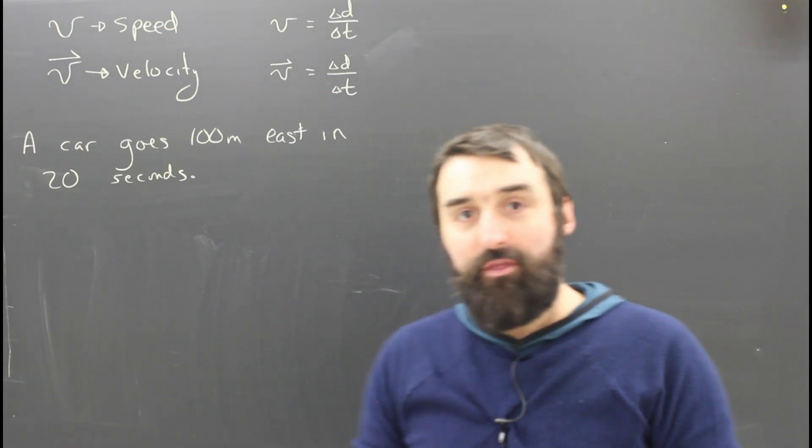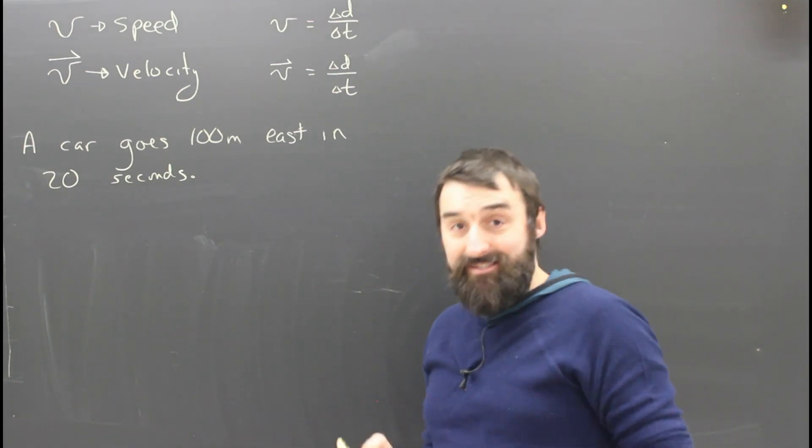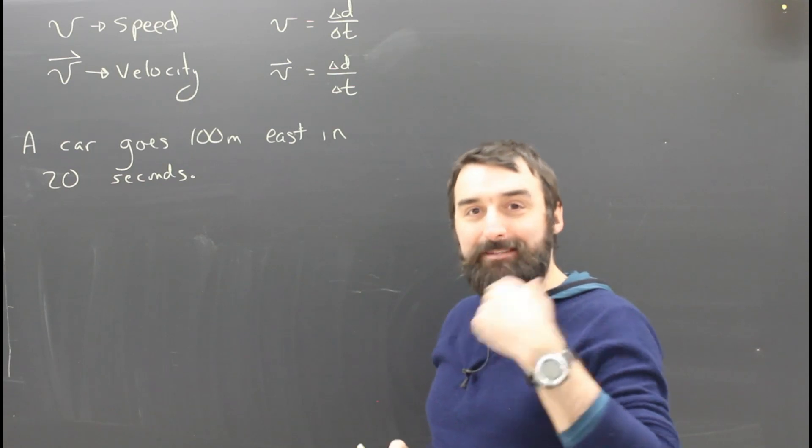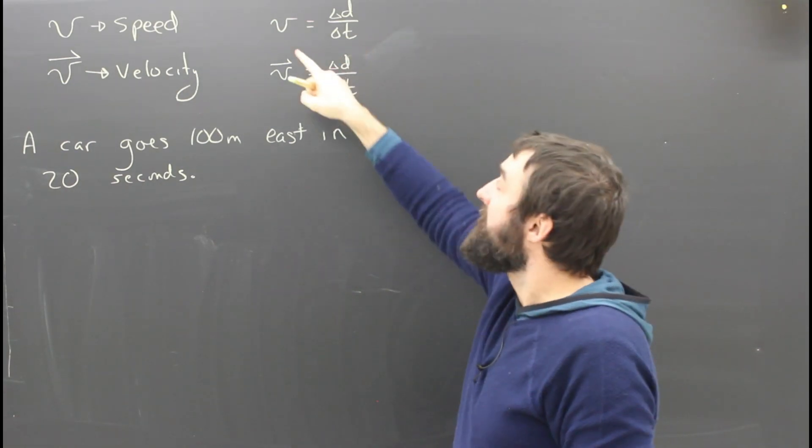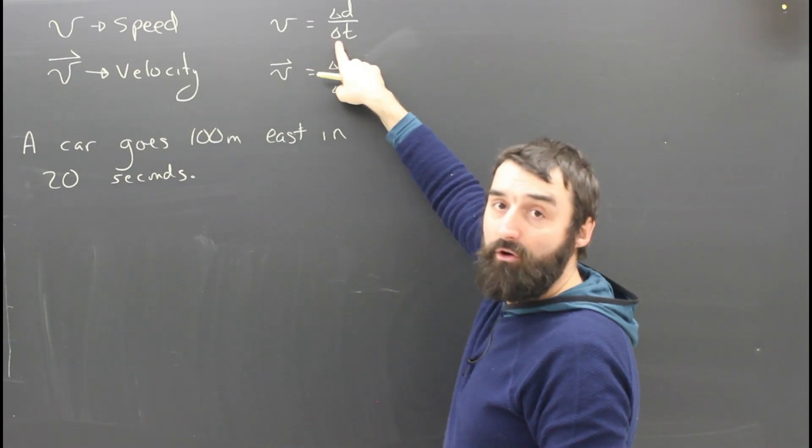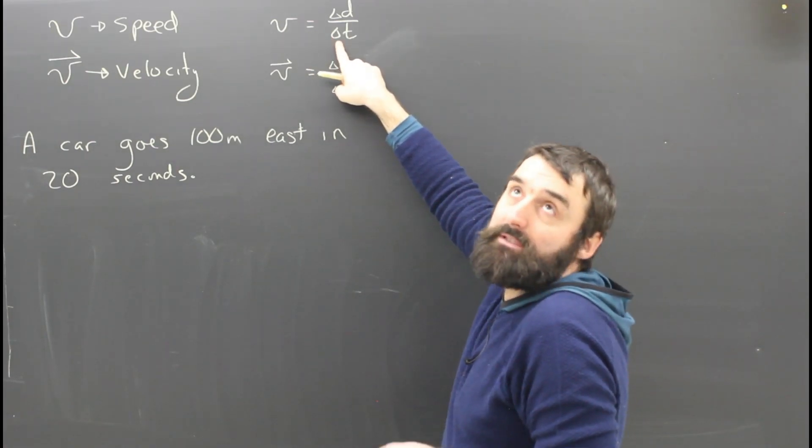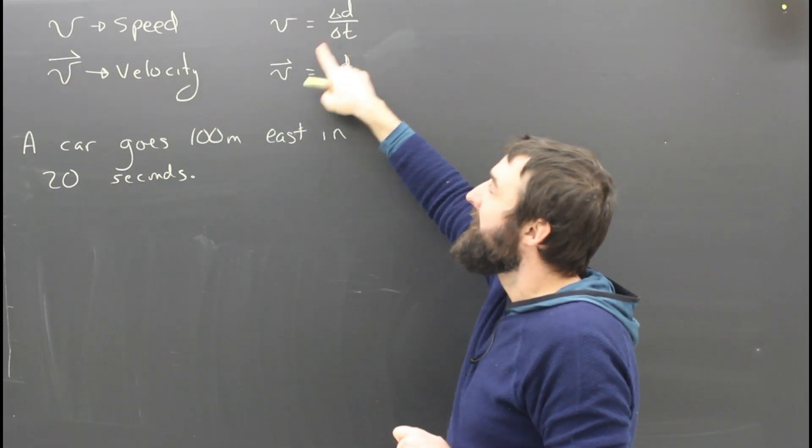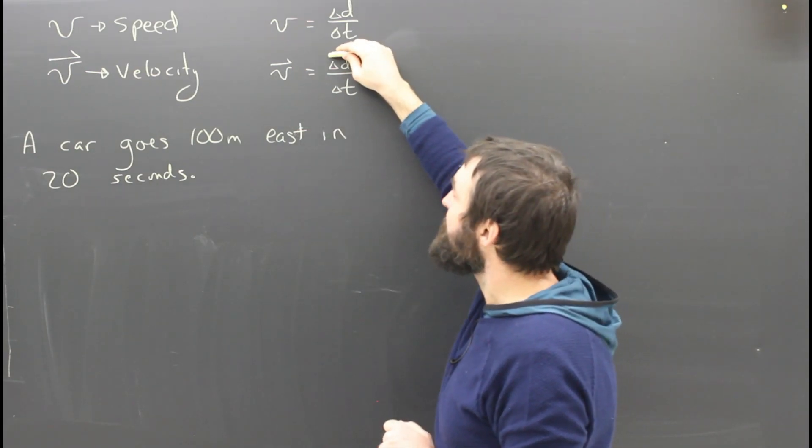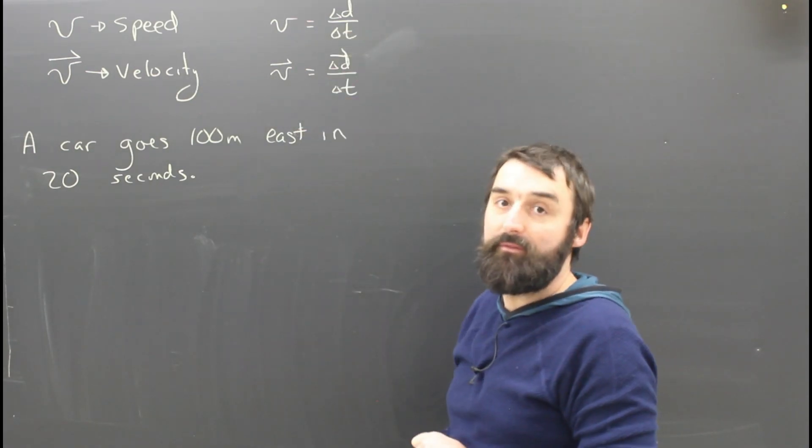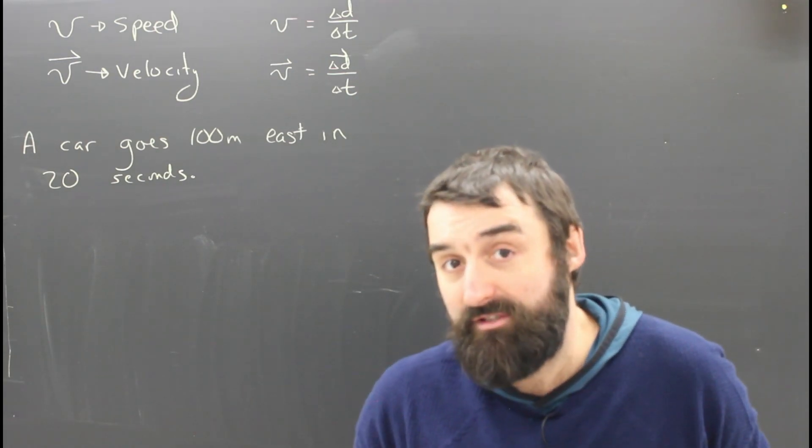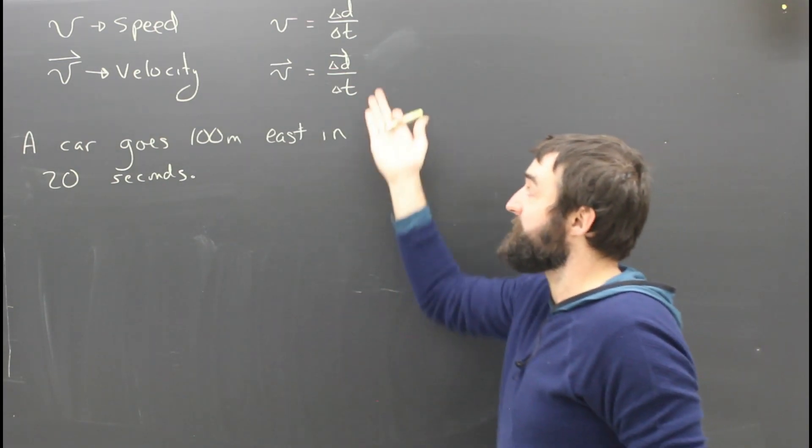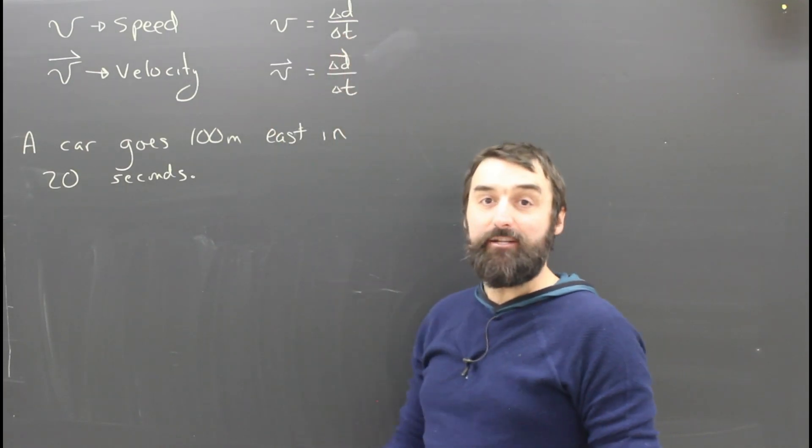But I don't want you to think that speed and velocity are basically the same. They are different. What's the main difference? The difference is how you calculate them. The speed is the distance over the time. That's how you calculate speed. The velocity is not the distance over the time. The velocity is the displacement divided by the time. So that's the main, most important difference. Velocity is calculated using displacement and speed is calculated using distance.